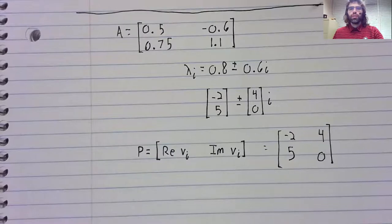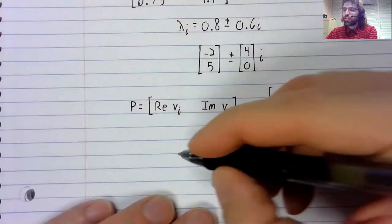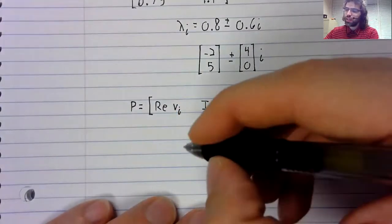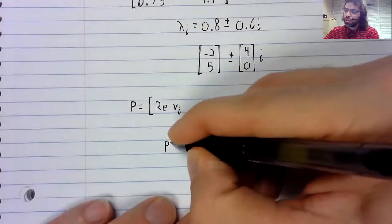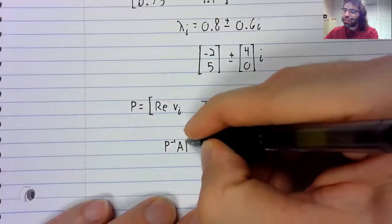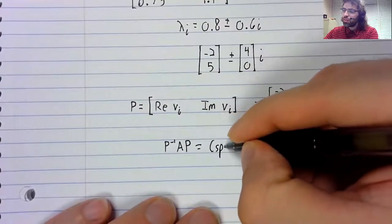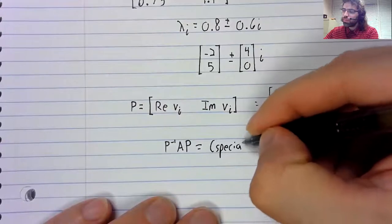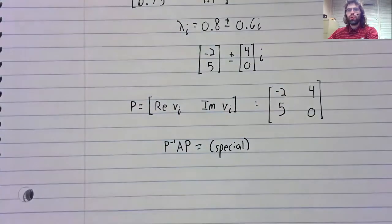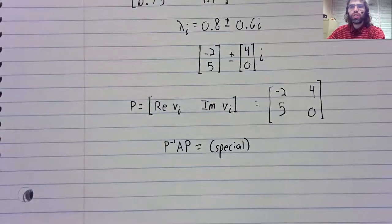Now, it is always going to be true that after we've done this, P inverse times A times P equals a special matrix of the form we looked at in the previous video.